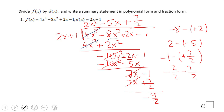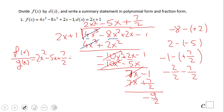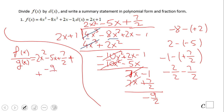So the answer for our problem — f of x divided by q of x — equals 2x squared minus 5x plus 7 over 2, plus the remainder negative 9 over 2, divided by 2x plus 1. A little interesting the way it looks.